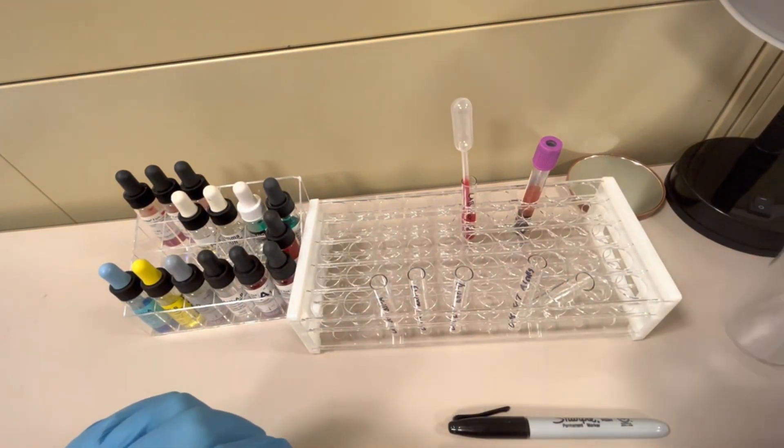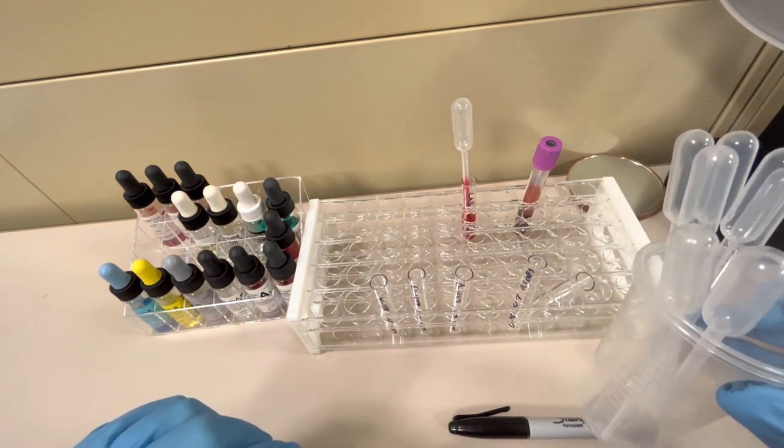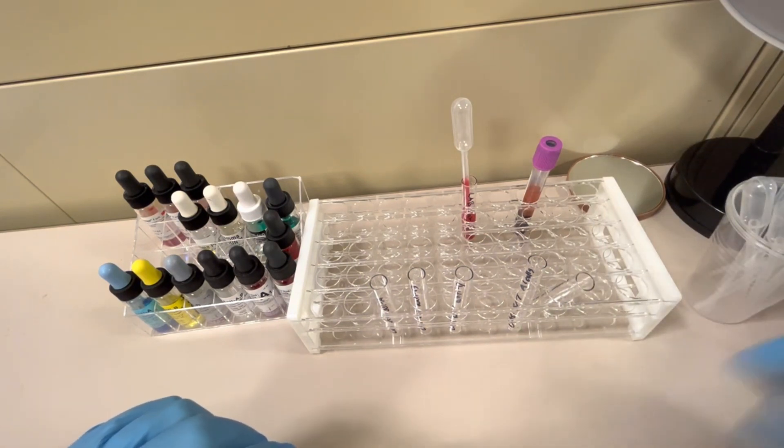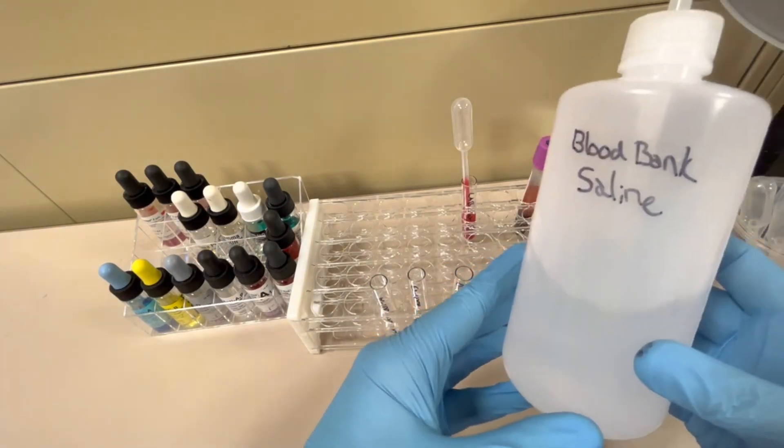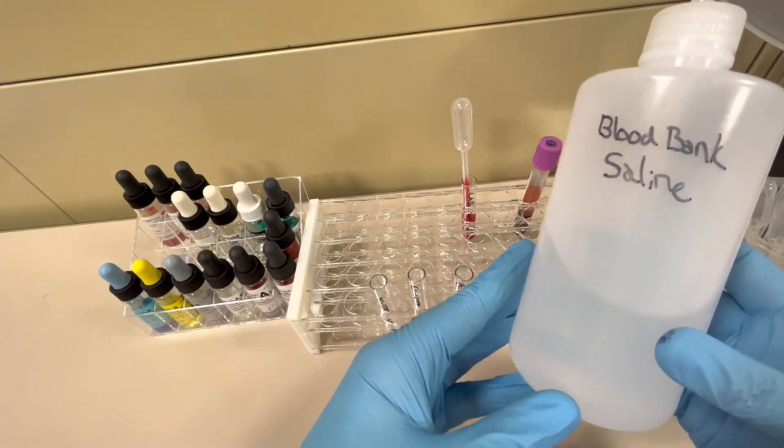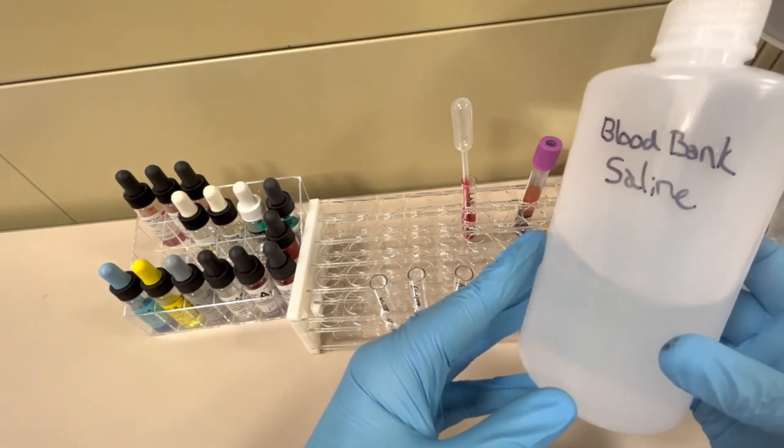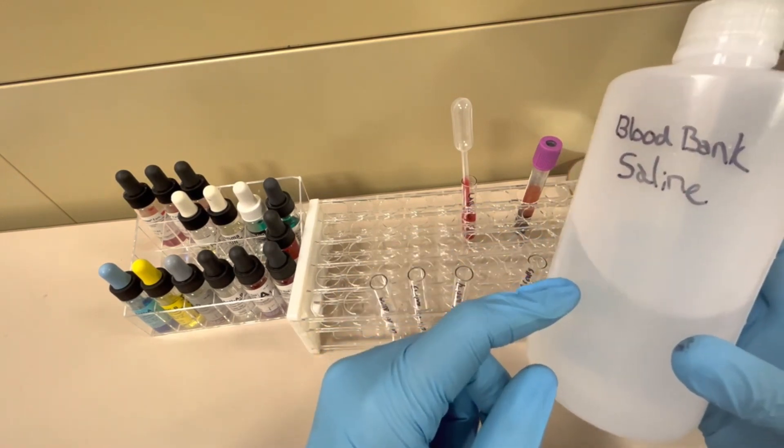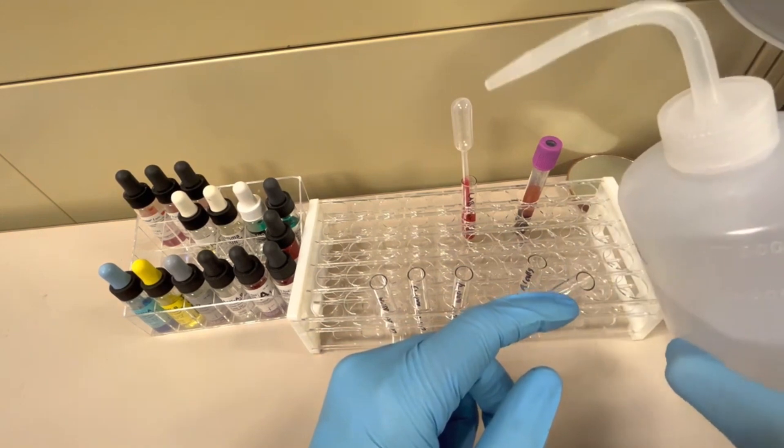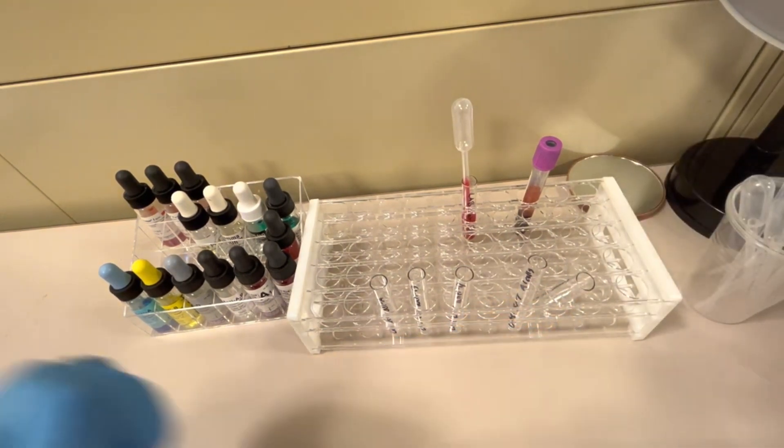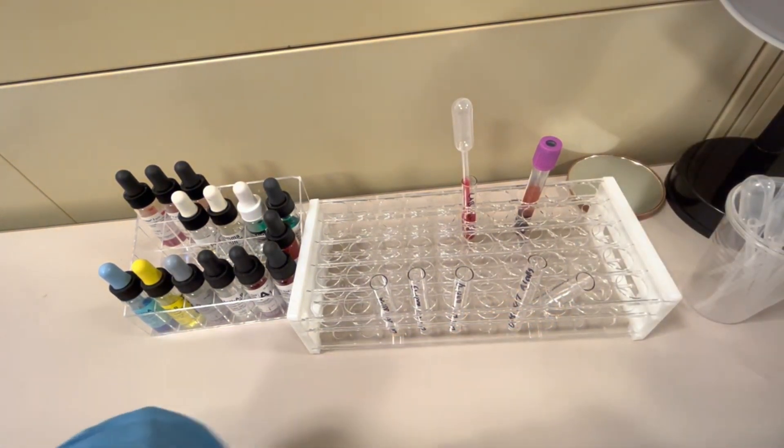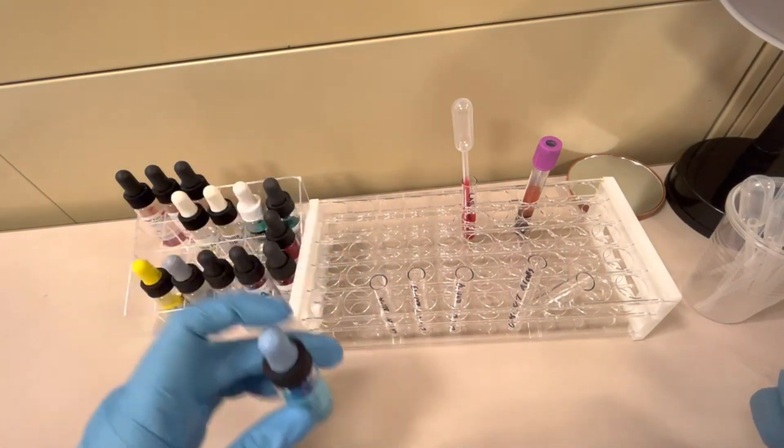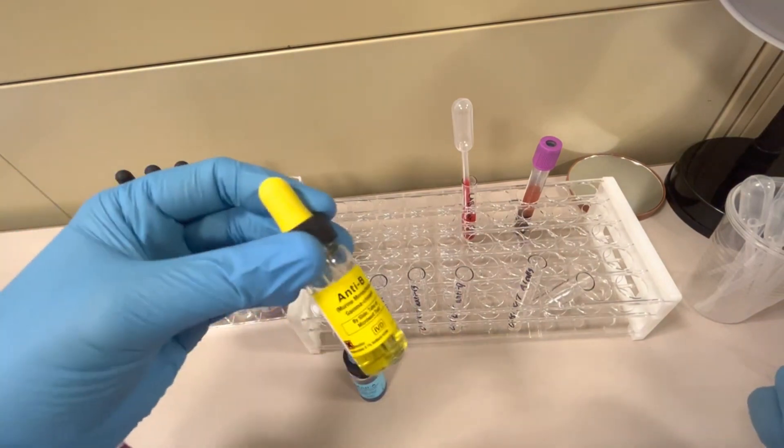In addition, I have some disposable clean pipettes, transfer pipettes, and I also have blood bank saline. We use blood bank saline in the blood bank. We cannot use water as water lyses the red blood cells. I have this in a little squirt bottle. And then we need some reagent. For the ABO front and back type, we need Anti-A, Anti-B...